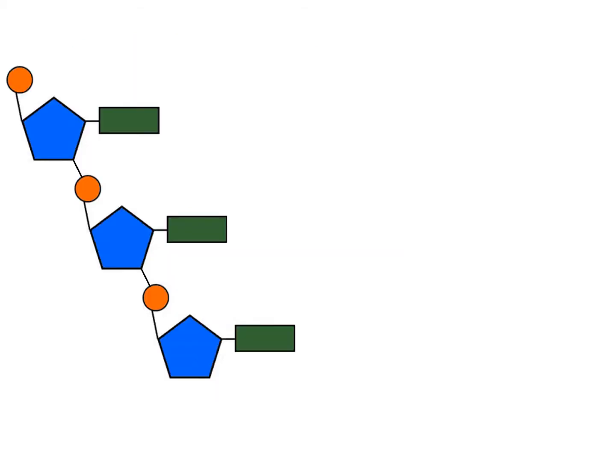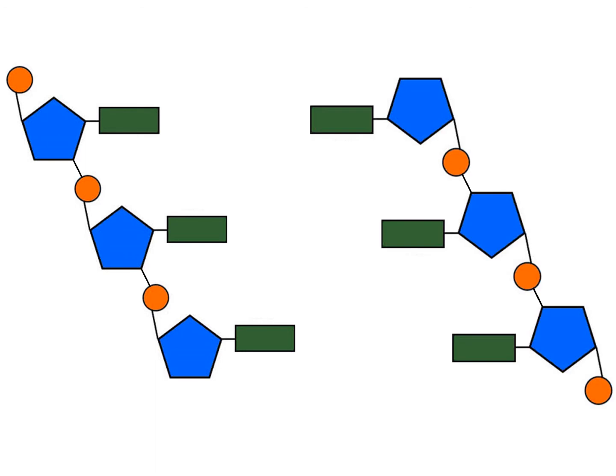We can then string those nucleotides together to get one half of the DNA. If we then string a second strand of DNA that is complementary to the first strand, they will bond, making the DNA ladder.